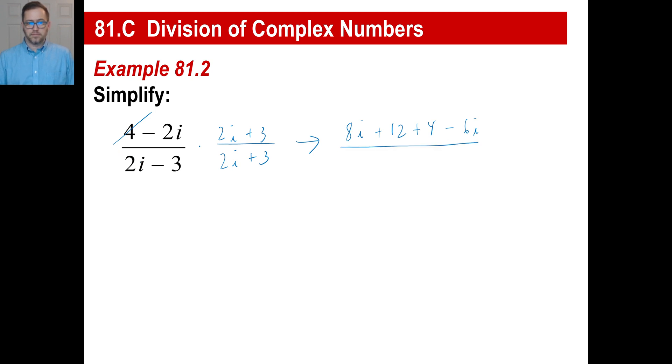And again, we can skip everything except for the first and the last. So 2i times 2i is 4 times i squared, or 4 times negative 1, which would be negative 4. Negative 3 times positive 3 is negative 9. All right. So let's get these crammed together.